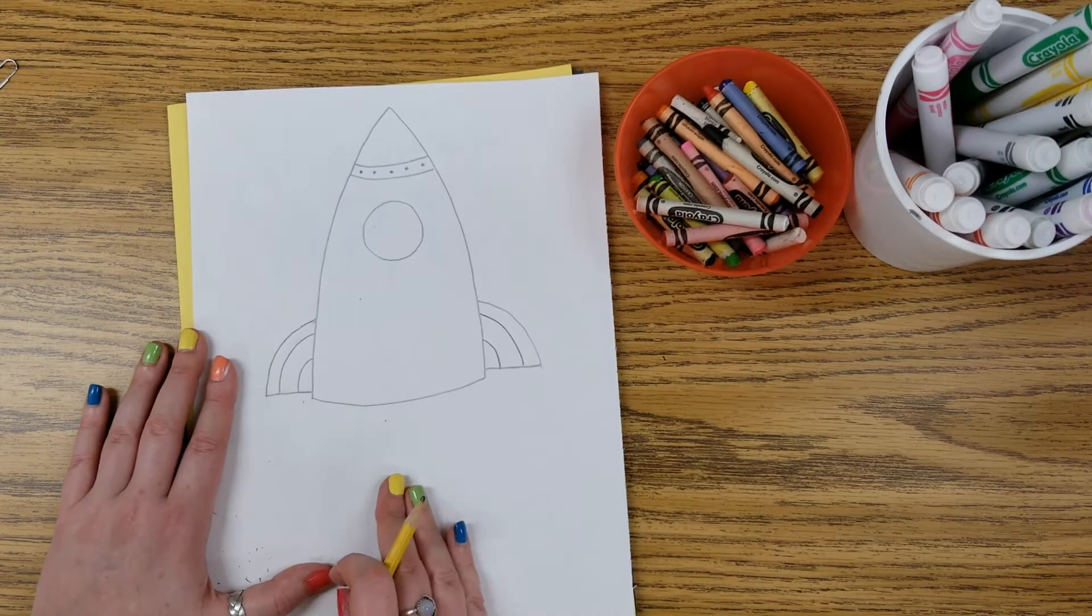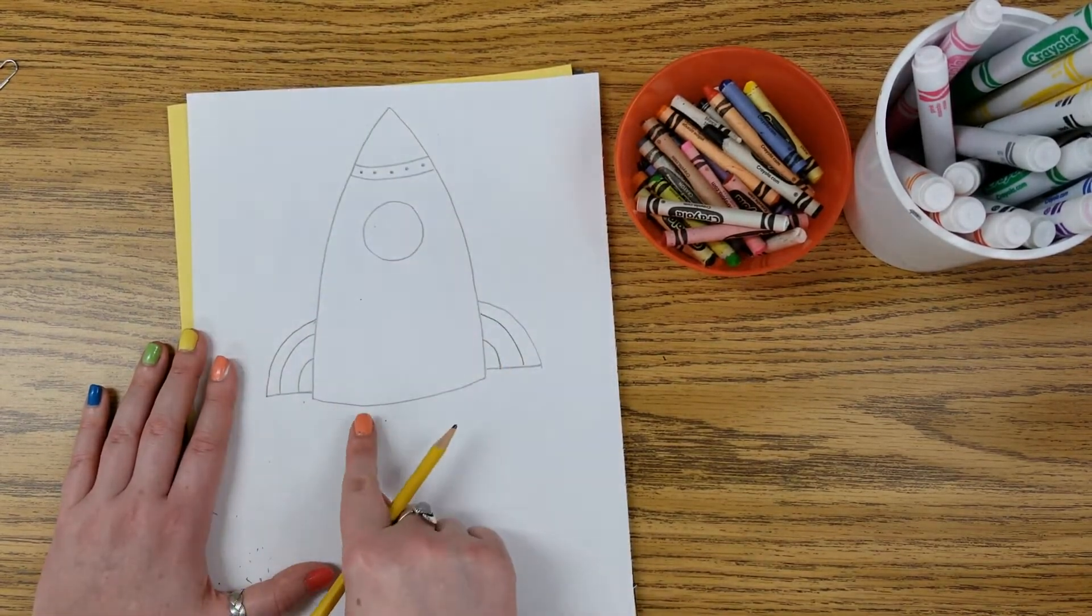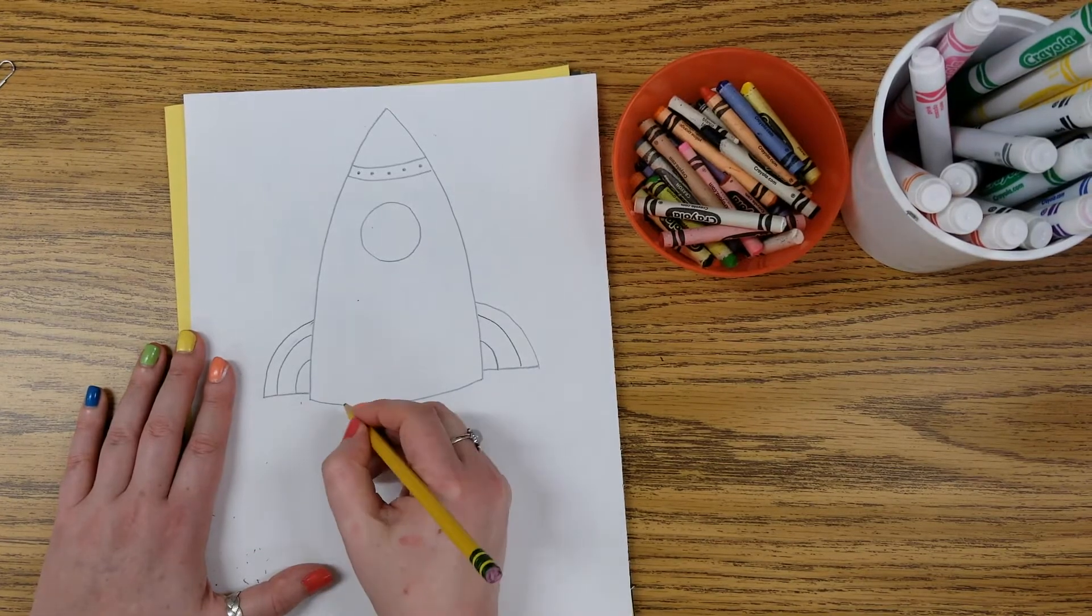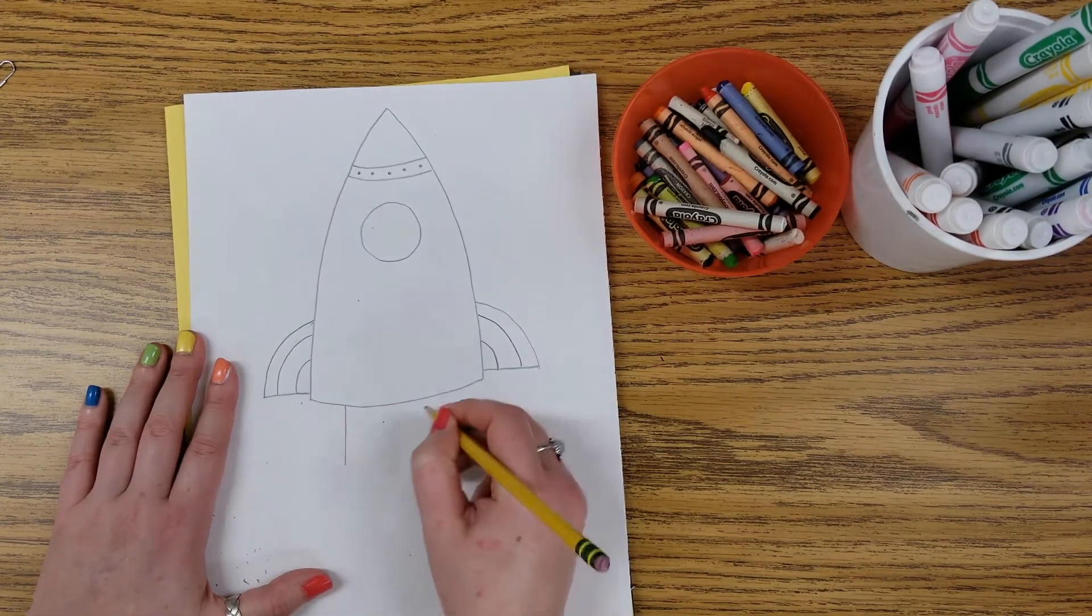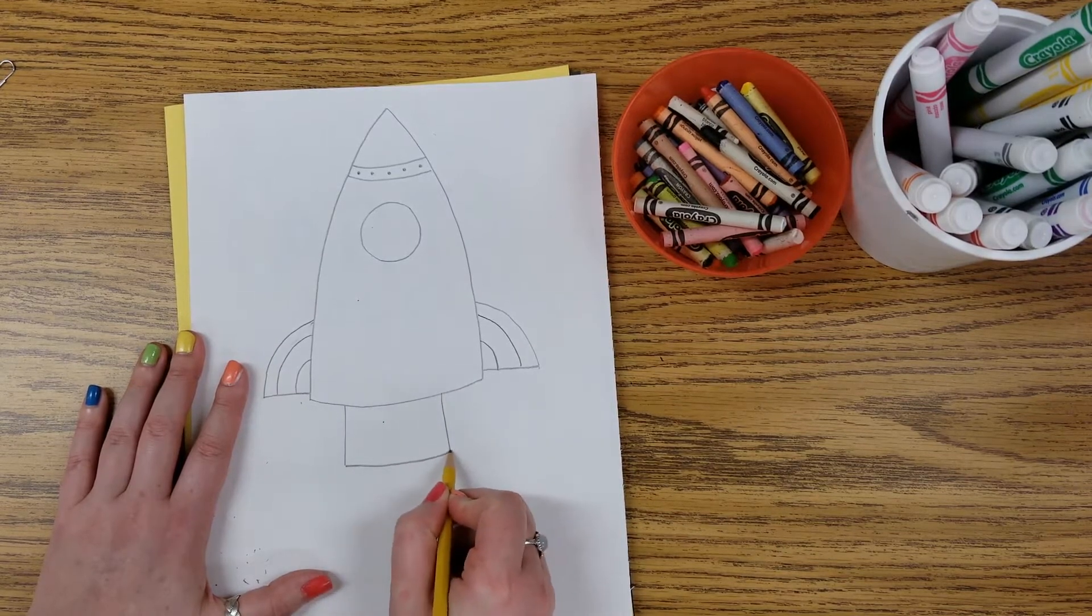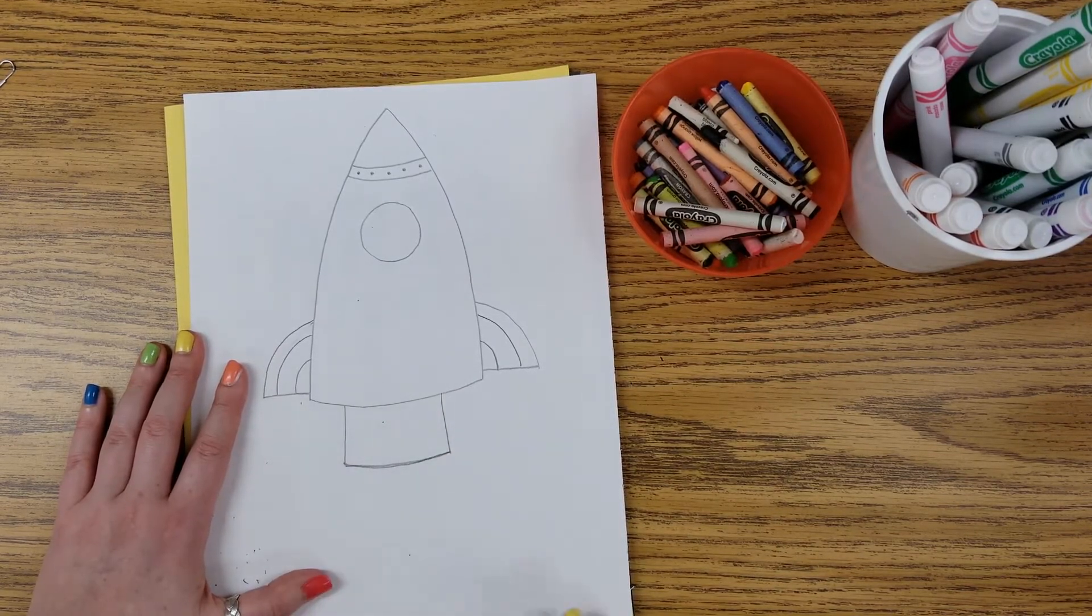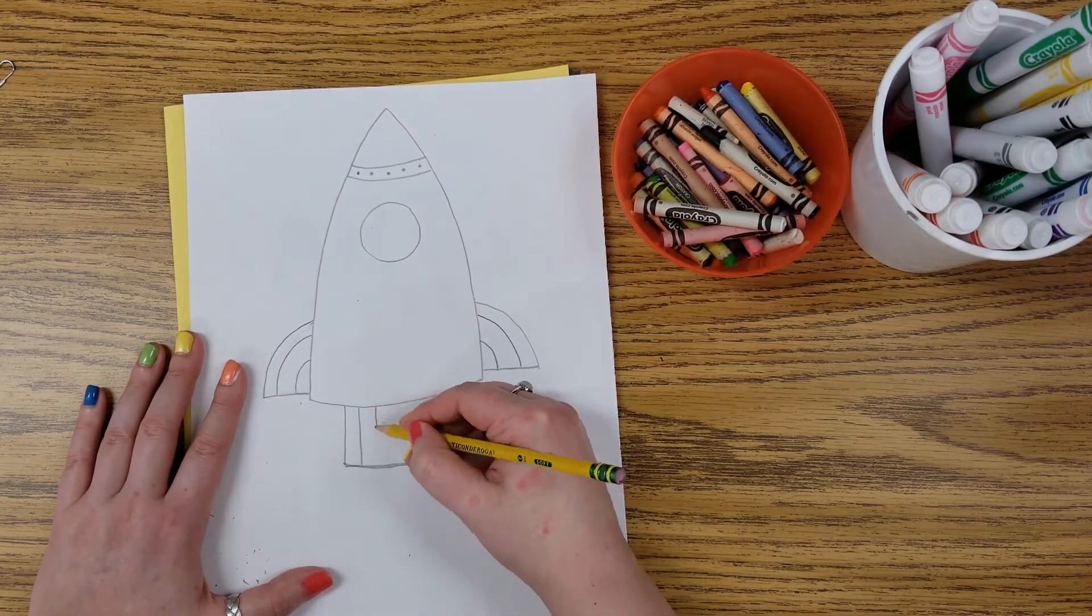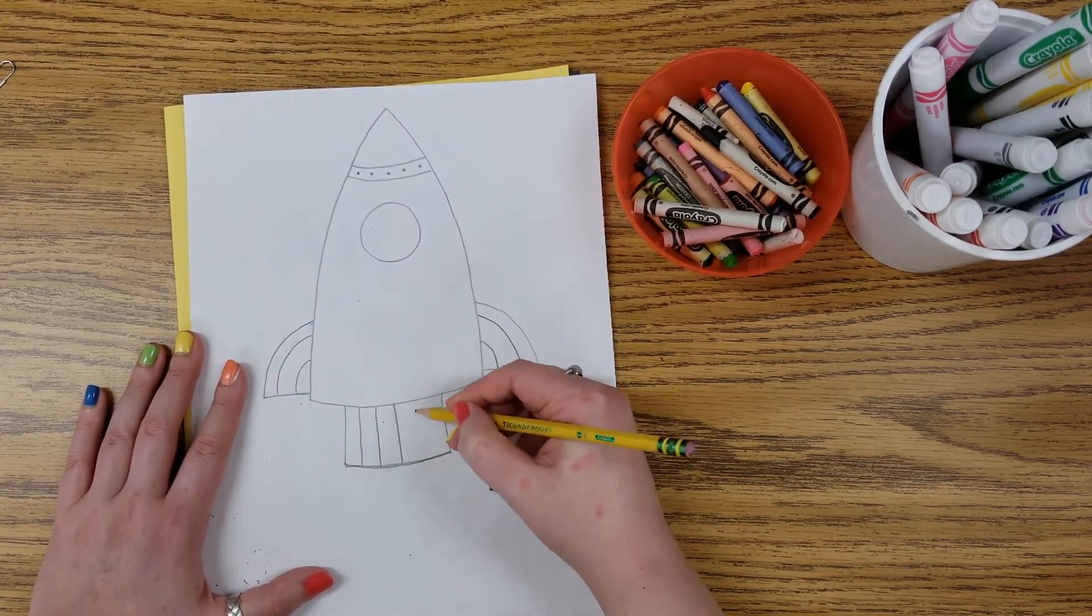Next, we need to help our rocket blast off into space. So at the bottom, we're going to add a throttle. A throttle is where the fire will come out. So I'll add two straight lines. And I like to make, again, a little bit of a curve at the bottom for my throttle. Once again, I could add more details like some lines on there if I want to, but I don't have to.